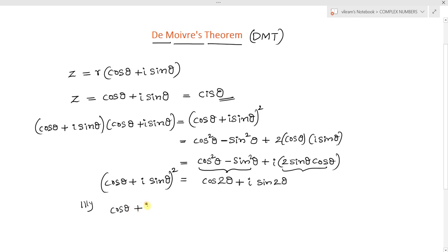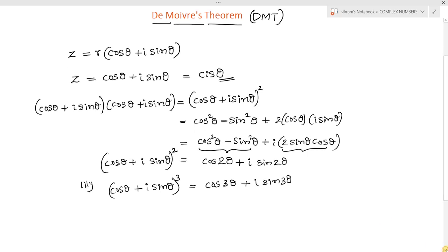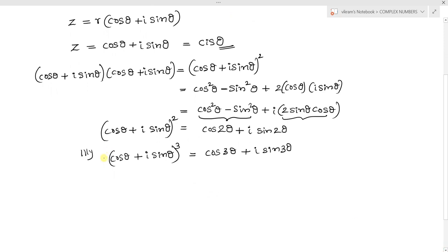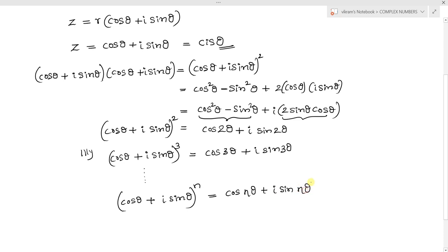In a similar way, if we check for (cos θ + i sin θ)³, we obtain the result as cos 3θ + i sin 3θ. Extending this to the nth power of the polar form of a complex number, we can write: (cos θ + i sin θ)ⁿ = cos nθ + i sin nθ.